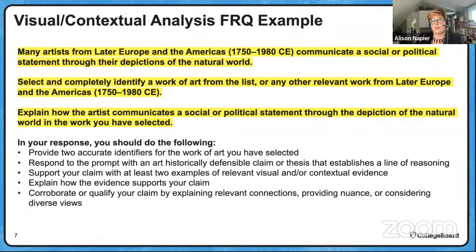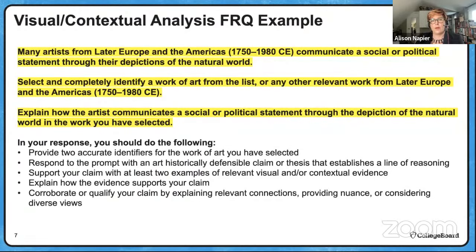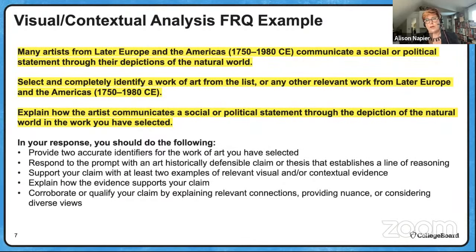So the prompt reads: many artists from later Europe and the Americas — which is 1750 to 1980, Unit 4 — communicate a social or political statement through their depictions of the natural world. Your job as a student is to select and completely identify a work of art from the list or any other relevant work from later Europe and the Americas, 1750 to 1980. You can pick one of the three options given or pick something else, but if you pick another option it must come from later Europe and the Americas and from 1750 to 1980. Make sure you're picking something that fits chronologically and geographically.